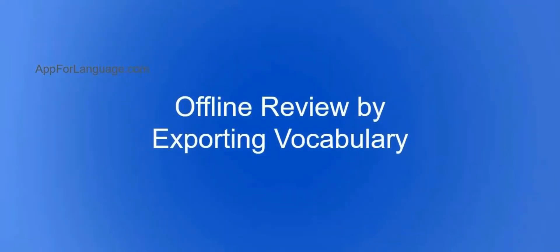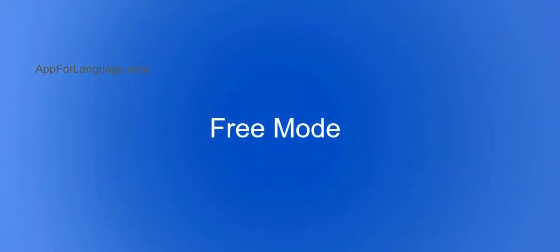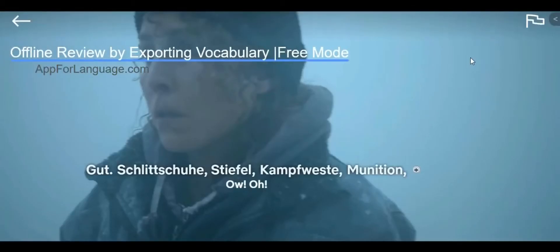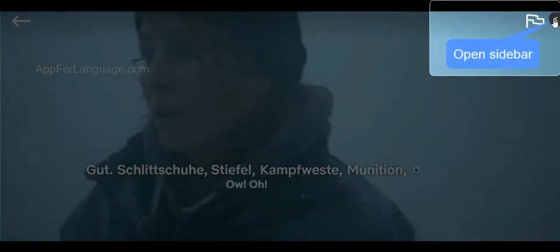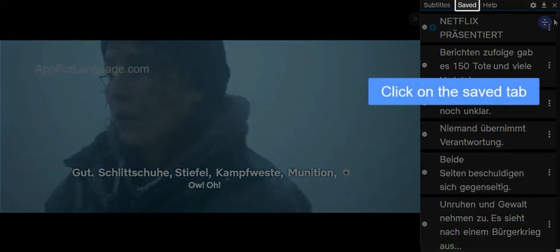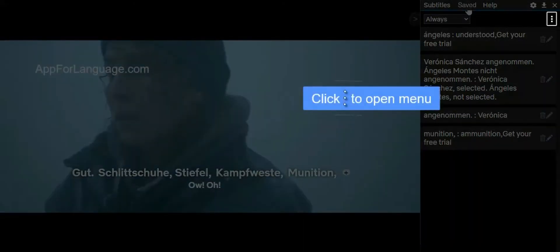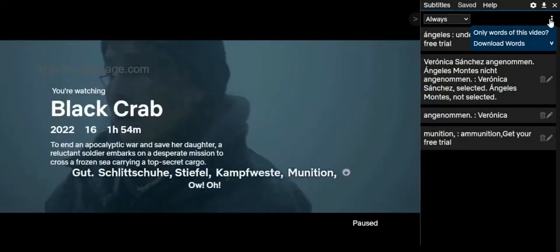This is how to export vocabulary for offline review with the Netflix and YouTube Google Chrome extension. On free mode, first go to the sidebar, click on the Saved tab, then click on these three dots to open the menu.